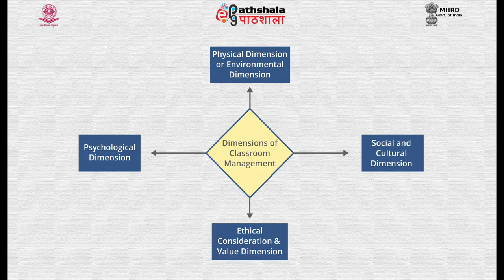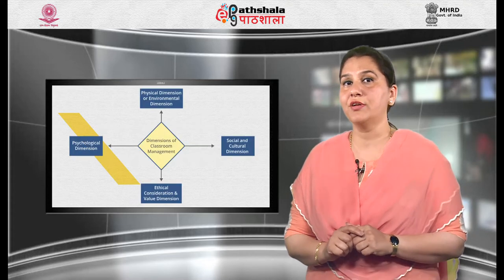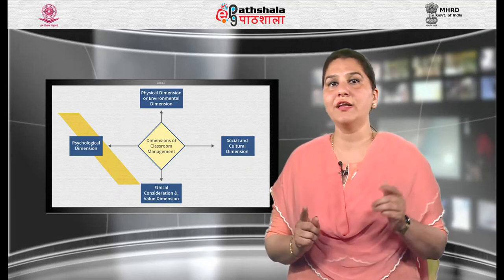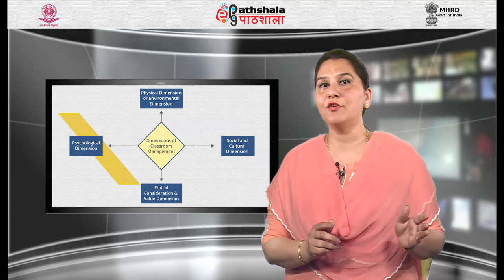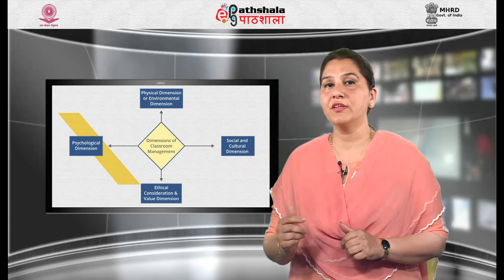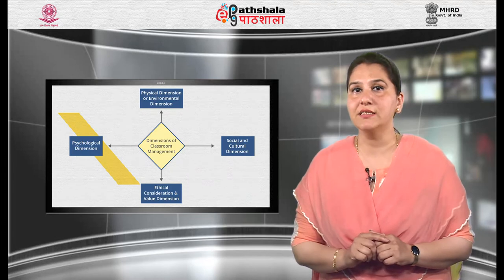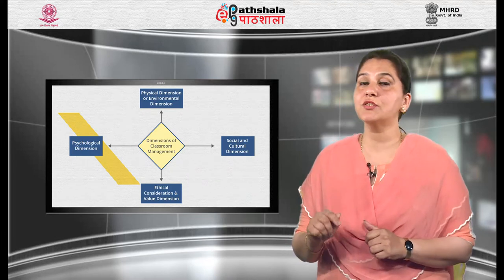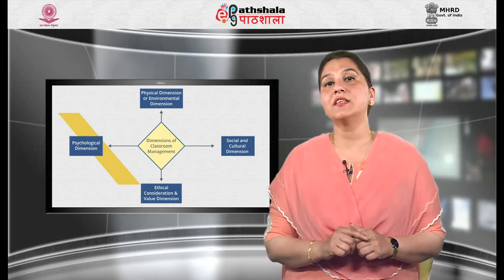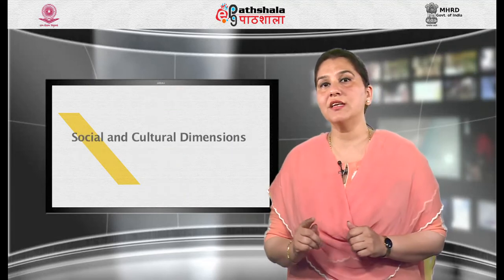First, the physical dimension or environment dimension. A classroom is a functional unit of an educational institution. The location, building, lawn and classroom are designed by the founder of the institution. Classroom management concerns the sitting arrangement, light arrangement, air arrangement and blackboard facilities. A teacher as a manager has to look into these facilities of the classroom, which helps in creating a conducive environment for learning.